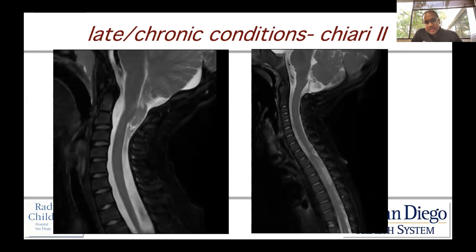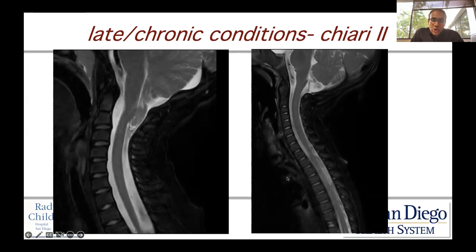You can certainly see it in the setting of what's called a Chiari 1.5, but I wouldn't concern yourself with a nuance like that. On the right, this is actually a patient with an open neural tube defect that was closed postnatally and doesn't have a Chiari 2 malformation. So you can see that there is a wide range here.